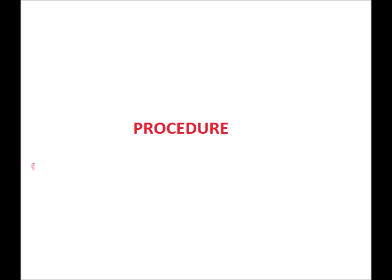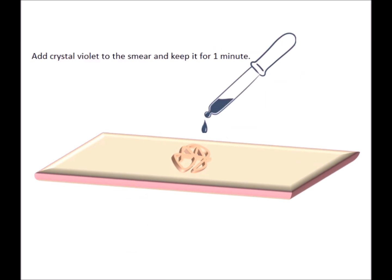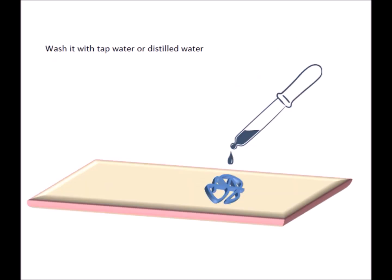Now we will prepare a bacterial smear. Using an inoculating loop across a glass slide, we make a smear using distilled water and air dry it. Next, we heat-fix the bacteria on the slide using a spirit lamp or a hot plate for 3–5 seconds. Then we add crystal violet stain to the bacterial smear and keep it for 1 minute. Once done, we wash the slide with tap water or distilled water.